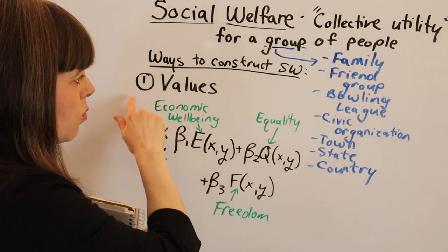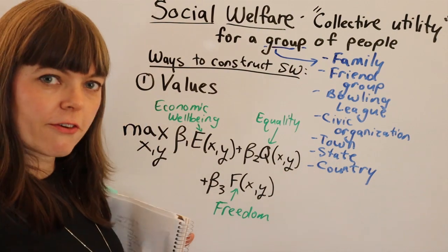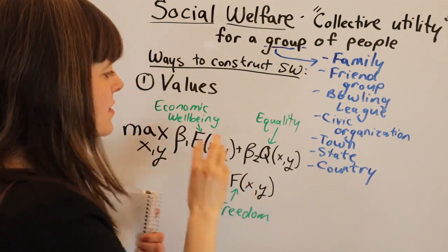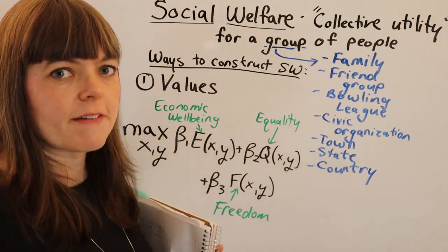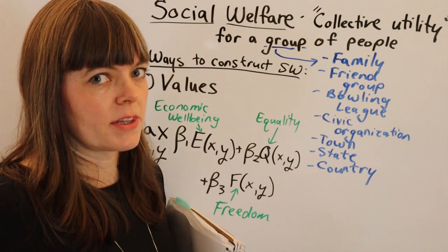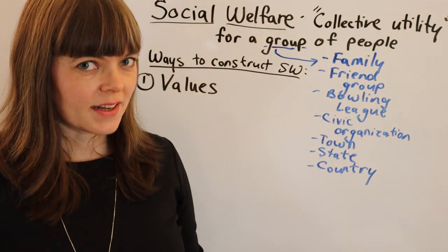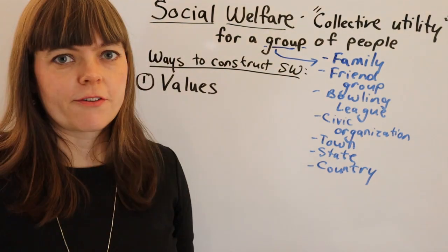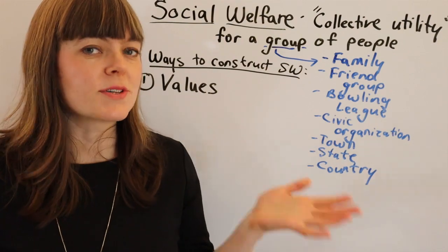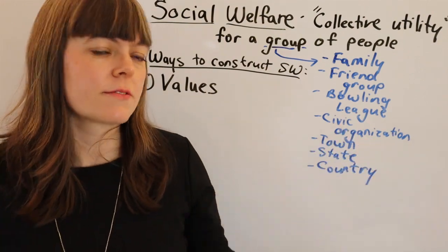That's the first way you can set up a social welfare function — by maximizing some set of values that matter to the population. The second way you can construct a social welfare function is to simply add up the utility of everybody involved.